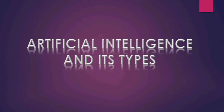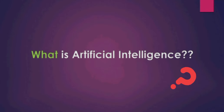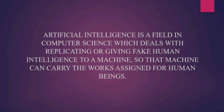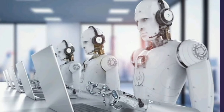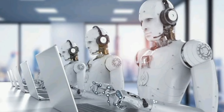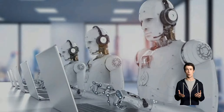Today we are going to see a small introduction on artificial intelligence and its types. Artificial intelligence is a field in computer science which deals with replicating or giving fake human intelligence to a machine, so that the machine can carry out the works assigned for human beings. In simple terms, artificial intelligence means making a machine think and process like a human being.